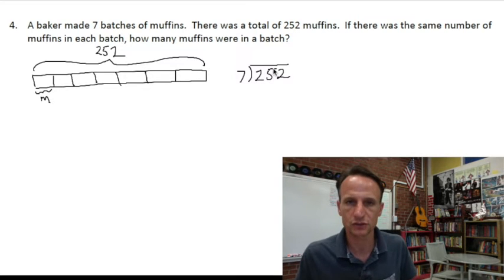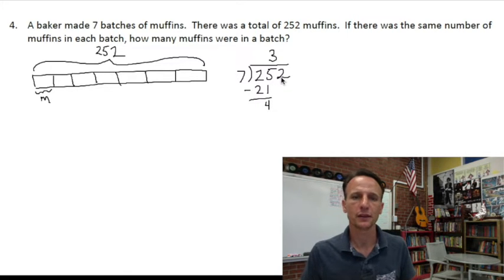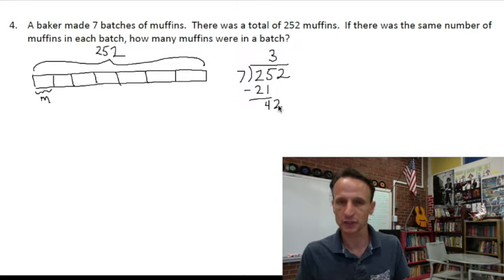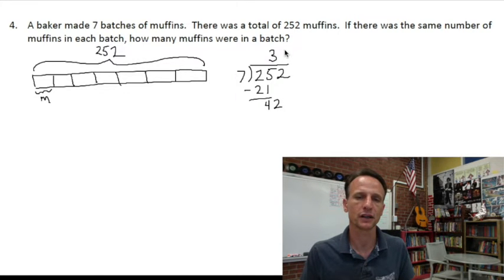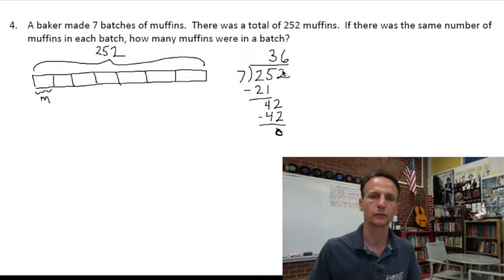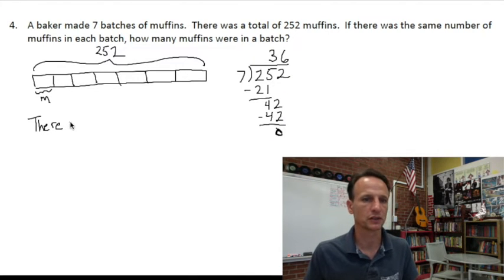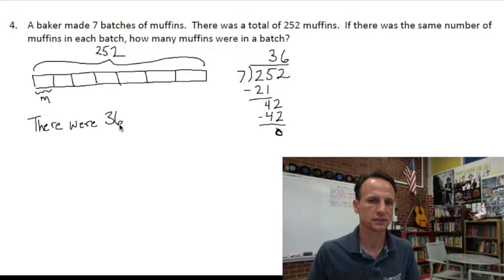How many sevens in 25? Three, because three times seven is 21. Subtracting, we're left with four, then two ones — so how many sevens in 42? Six, because six times seven is 42. There shouldn't be any remainder here since the problem stated the same number of muffins in each batch. So there are 36 muffins in each batch. The baker baked 36 muffins in each batch.